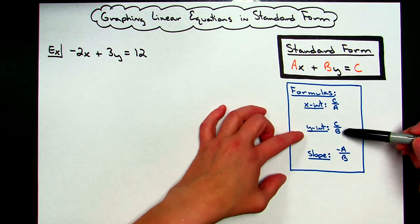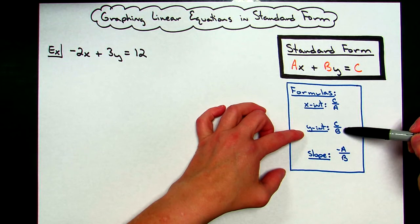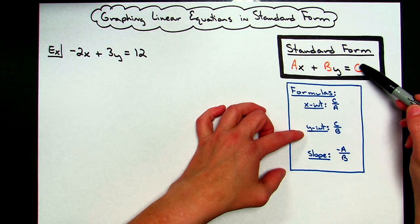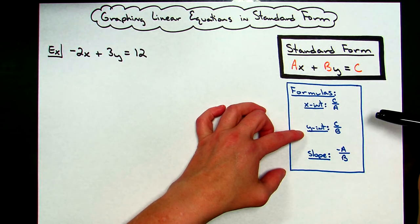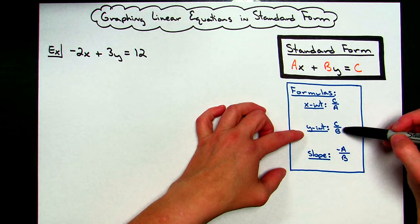The formula for the Y-intercept is C over B. So, C divided by B. If it comes out to be a whole number, it makes it really nice. You can find that Y-intercept really easy.